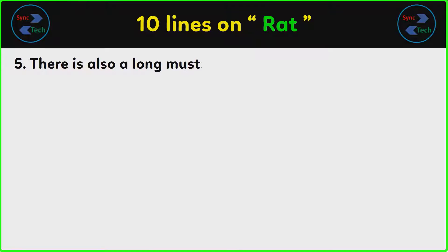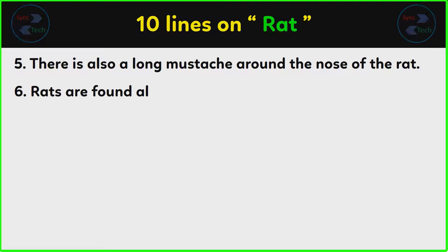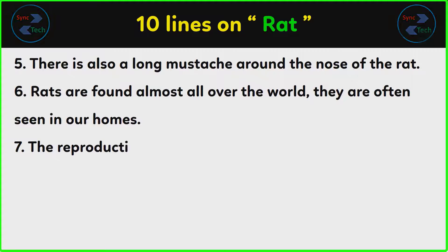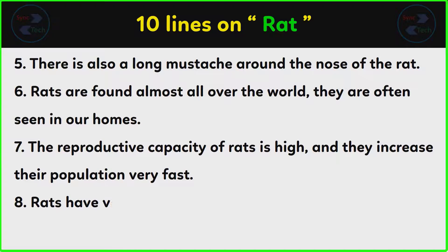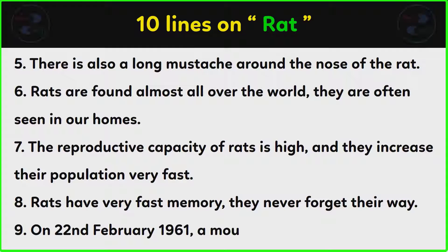There is also a long mustache around the nose of the rat. Rats are found almost all over the world and are often seen in our homes. The reproductive capacity of rats is high and they increase their population very fast. Rats have very fast memory and they never forget their way.